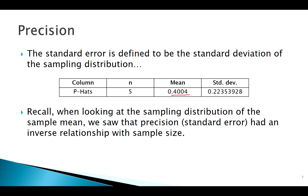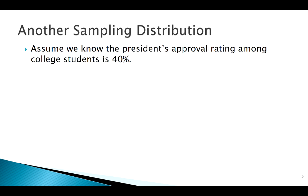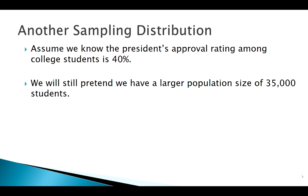Standard deviation, calculated a number, put a number on it there. I'm going to build another sampling distribution, assuming again P is 0.4, 35,000 students, big N is 35,000.